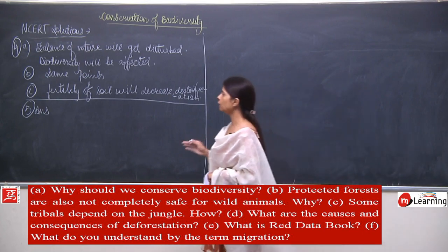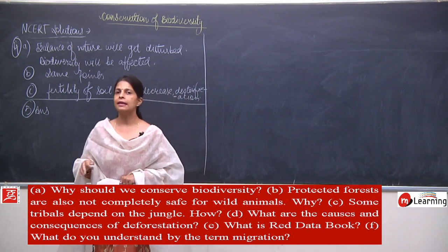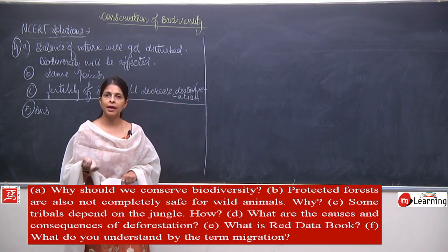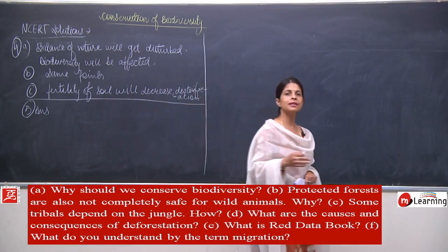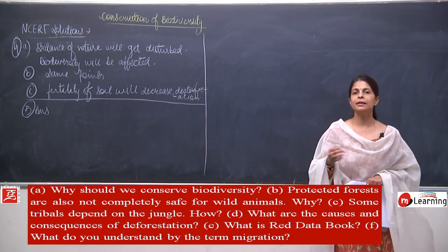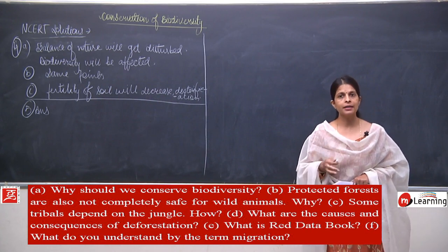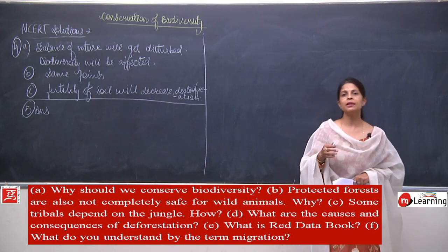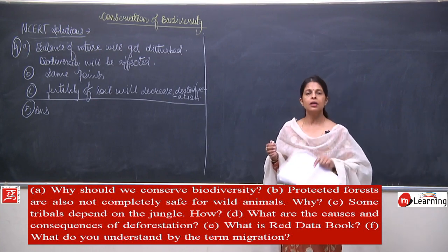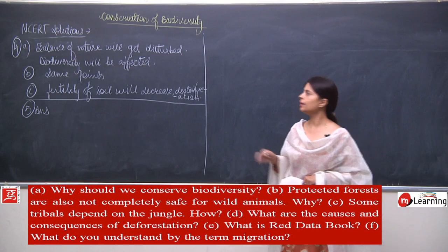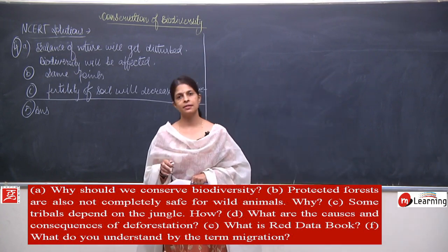First we write the definition: all forms of life which exist on the surface of the earth is biodiversity. We need to protect biodiversity because plants and animals are interdependent — they depend on each other for their existence. If biodiversity is not maintained, the balance of nature will be disturbed.